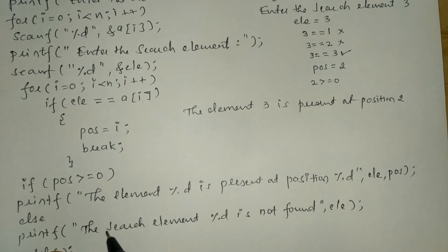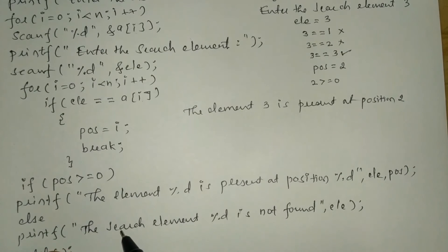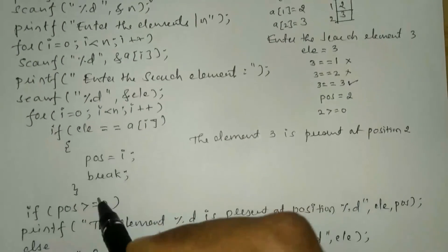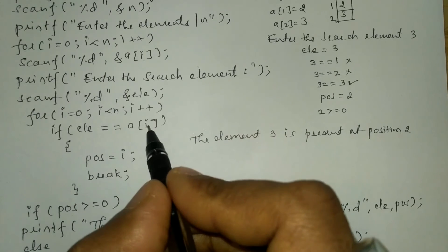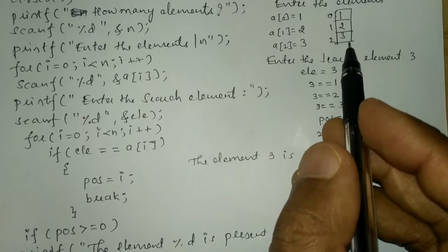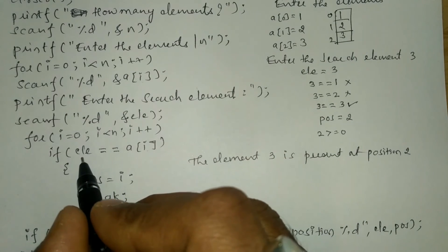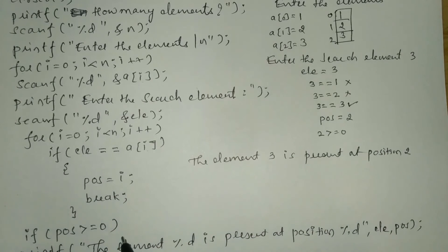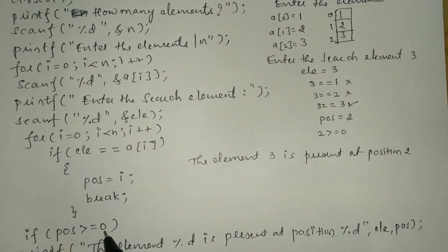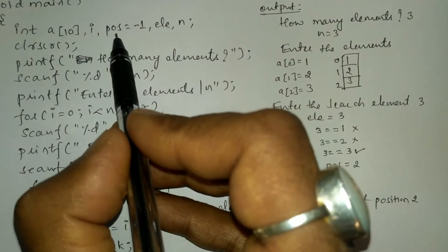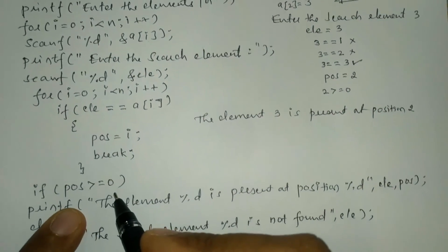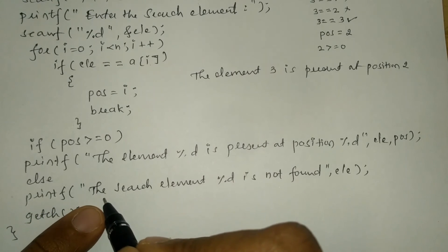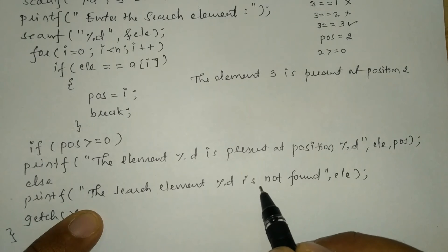In case you do not find the element — for example if I enter search element 4, which is not present in this array containing 1, 2, 3 — every time the condition will be false. So position remains minus 1, which is not greater than or equal to 0. Hence this returns false, and the else part executes, printing: the search element 4 is not found.